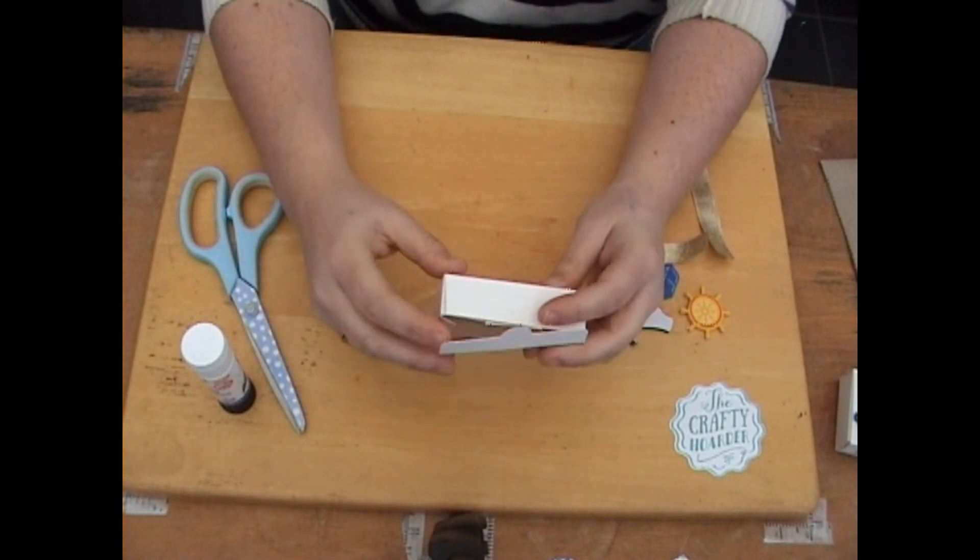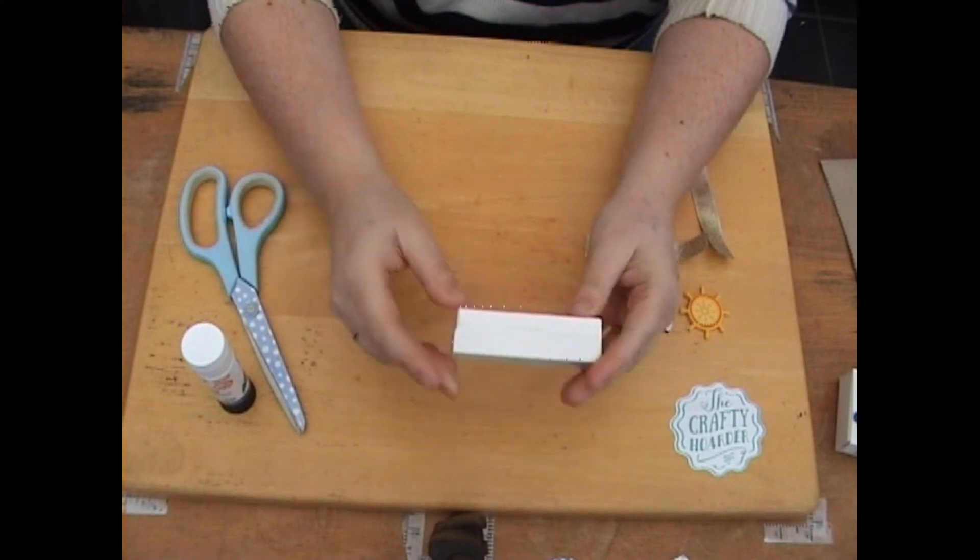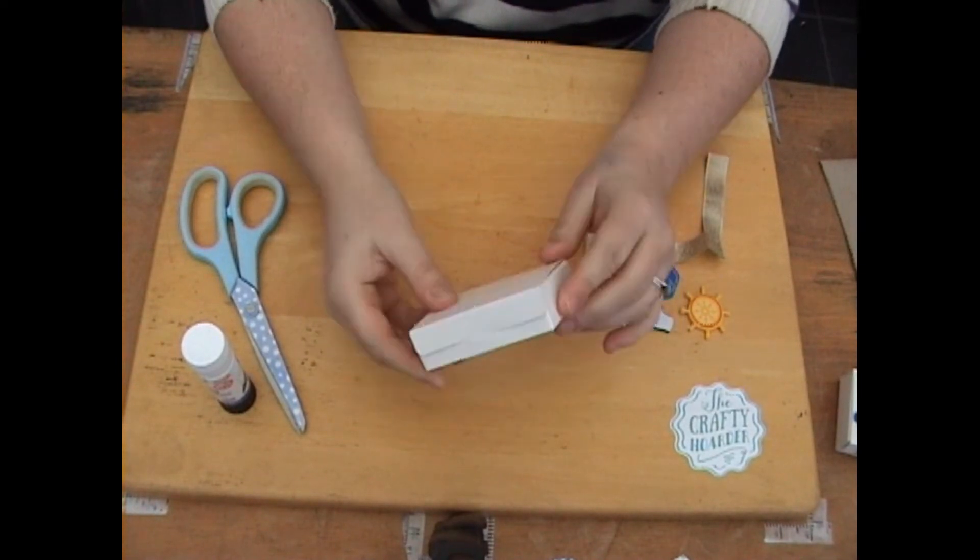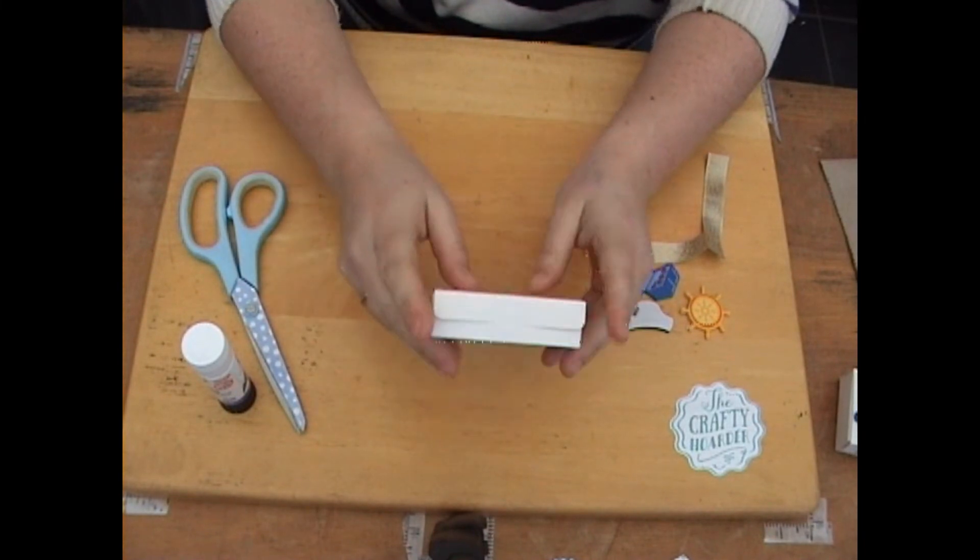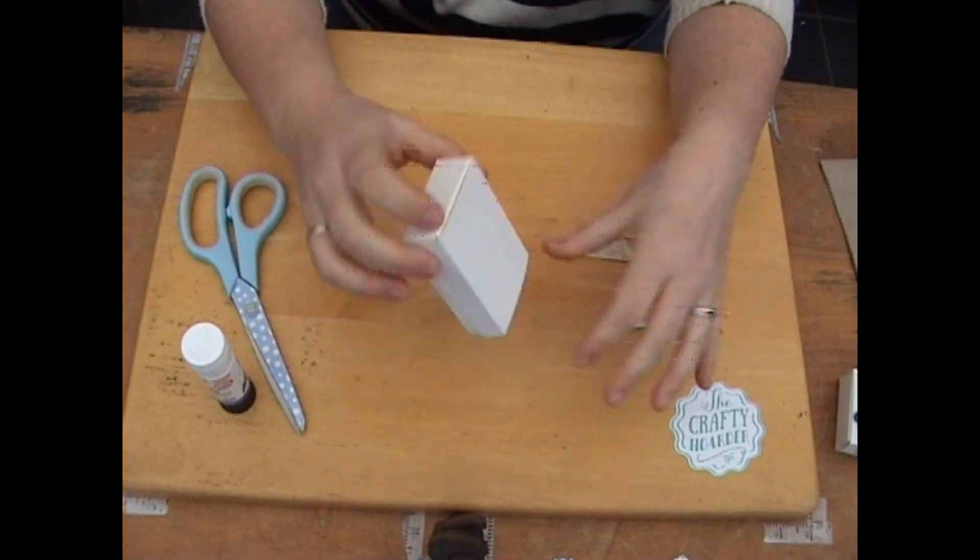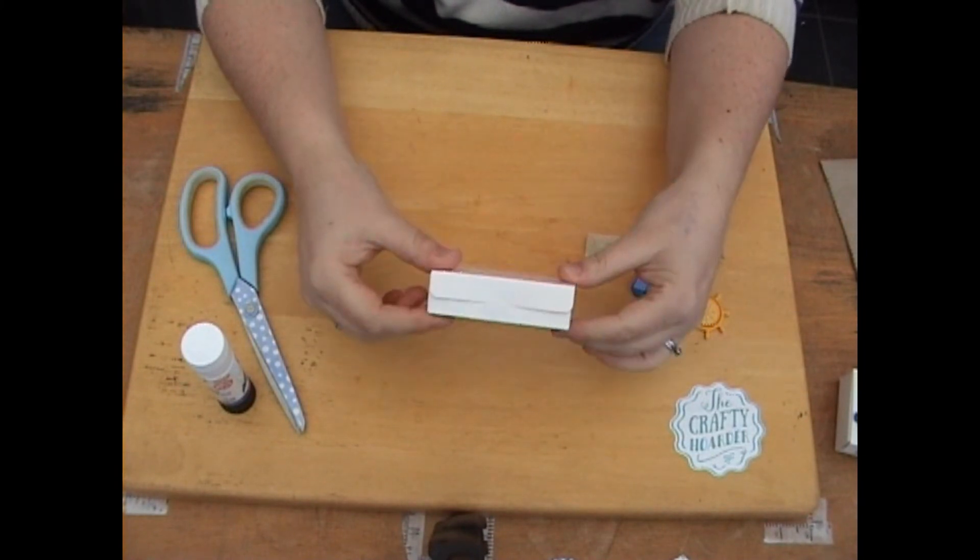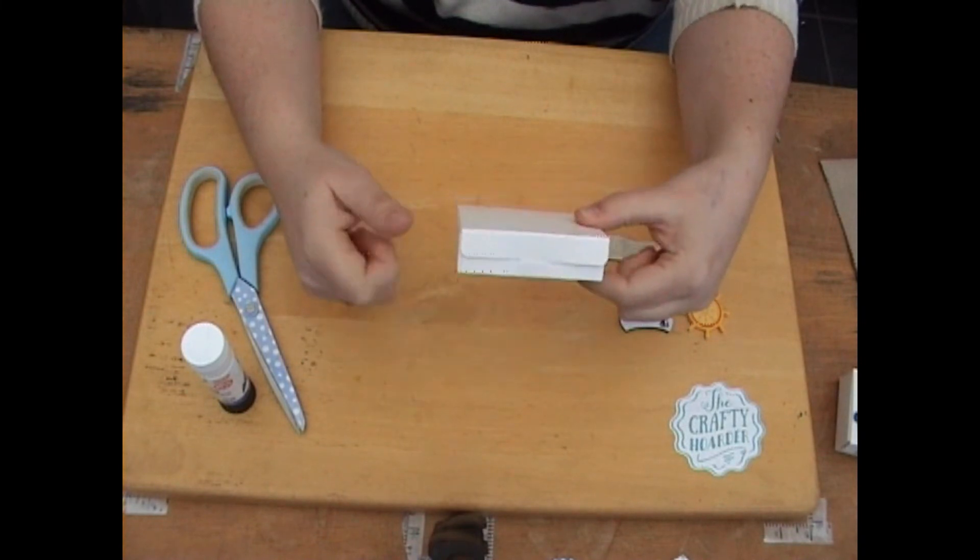So once we fold it together you'll see, just push it in nice and gently. So you've got the box. That's probably the bit that needs the most adult help. The rest, now it's made into a box, it's quite firm and solid. If you wanted to glue those tabs so they're not going to come out that's fine, but I have found that they've stayed in quite well and they're quite strong.